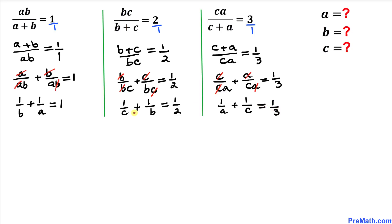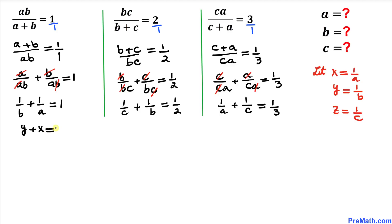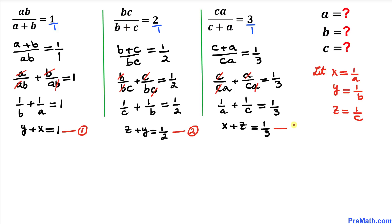Now in this next step, let's make things simple. Let's say X equals 1 over A, Y equals 1 over B, and Z equals 1 divided by C. After substitution, our equations become: Equation 1: Y plus X equals 1. Equation 2: Z plus Y equals 1 over 2. Equation 3: X plus Z equals 1 over 3.